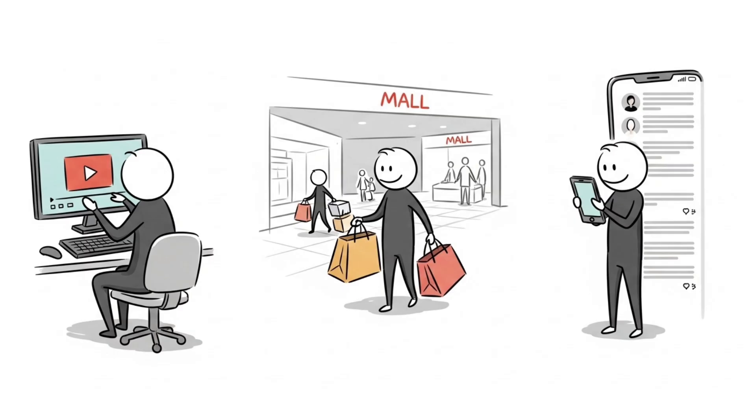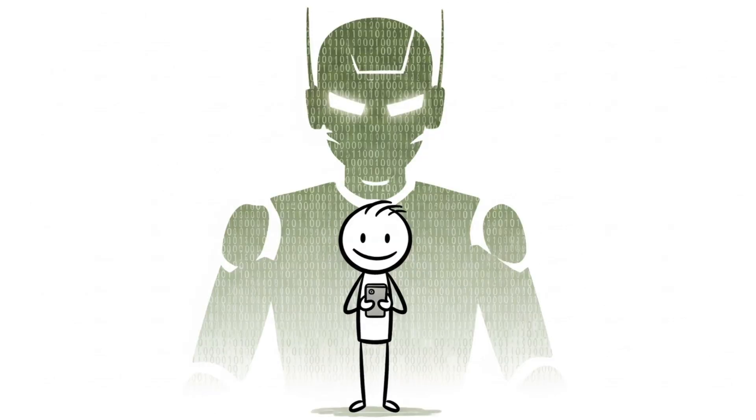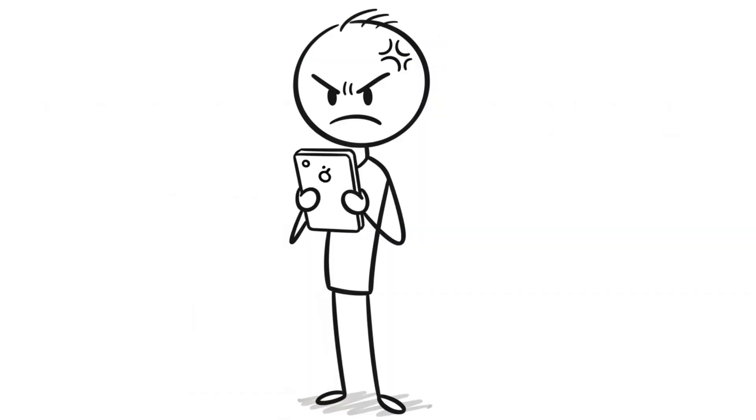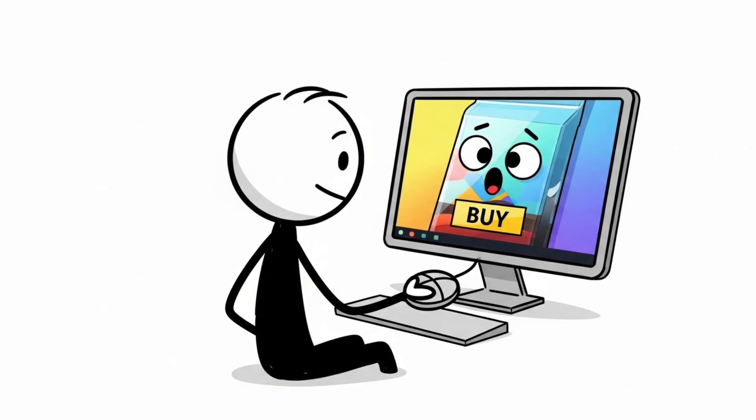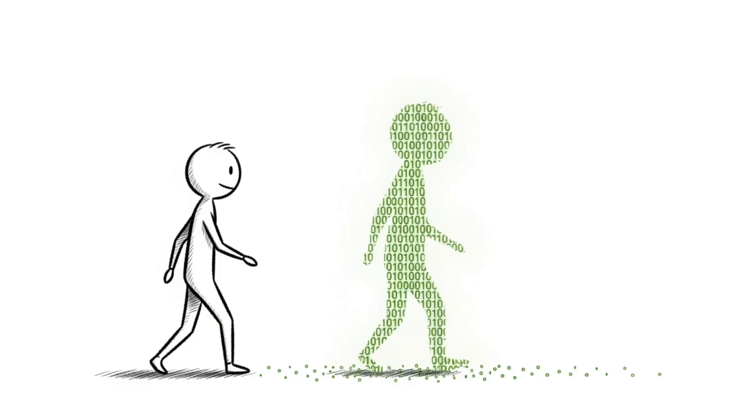Every video you watch, every product you buy, every political post you engage with is a tiny nudge shaping your future. The algorithm knows your psychological triggers better than you do. It knows which headline will make you angry or get a reaction. It knows which ad to show that will make you spend money. It predicts your choices before you even feel the need to make them.